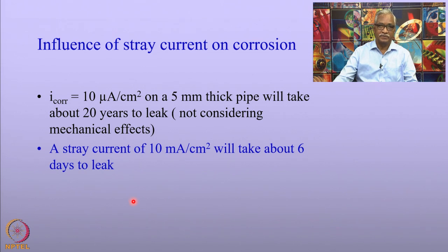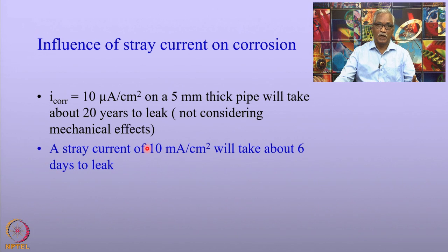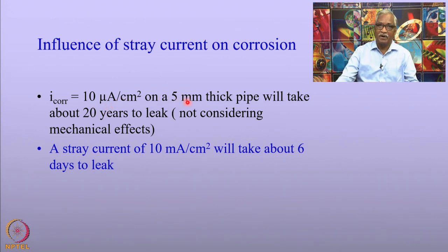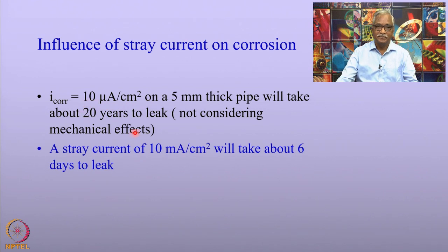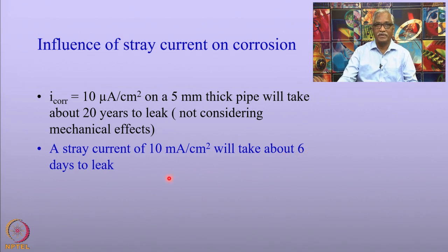Why should we be worried about stray current corrosion? Normally, pipelines will have a corrosion current density of the order of 10 microampere per centimeter square. If the structure is 5 millimeter thick, it will last 20 years before a leak commences, assuming mechanical effects are not in play. On the other hand, for a stray current corrosion of the order of 10 milliampere per centimeter square, it will take just about 6 days to leak. That is the severity of stray current corrosion we should be worried about.